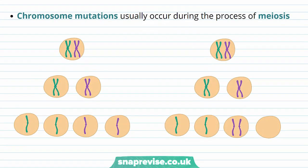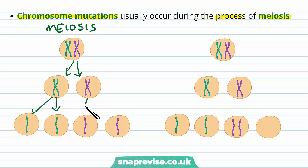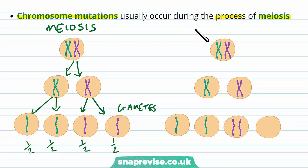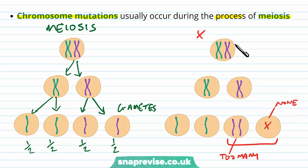Whereas gene mutations tend to happen during replication, chromosome mutations usually happen during the process of meiosis. In meiosis, we're forming gametes which have half the genetic material — original cells copy their material so that each gamete, for example sperm and eggs, has half our genetic material. When this goes wrong, we can often have chromosome mutations, where we've got too many chromosomes in one cell and not enough in the other. It's during meiosis, where chromosomes are being jumbled around and moved about, that these chromosomal mutations — changes to structure or number — can occur.